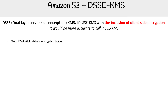With DSSE KMS, data is encrypted twice, and the key used for the client side encryption comes from KMS. This is kind of interesting, because think of SSE-C where you generate it locally and then send the key to AWS. But the way this works is that AWS sends you the key that they want you to use client side, and then you send the data and then it encrypts it again. So that's a little bit different.